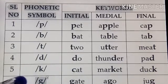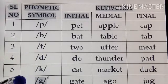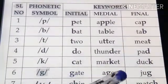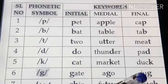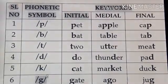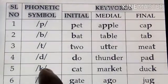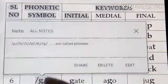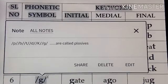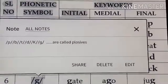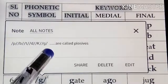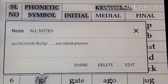This is /g/. As we have seen in 'gate', 'girl', 'jug'. Here we have a small note. The sounds p, b, t, d, k, g — all these are called plosives.